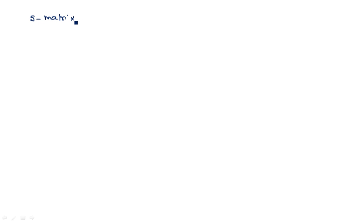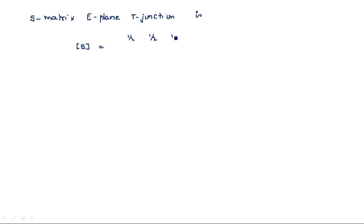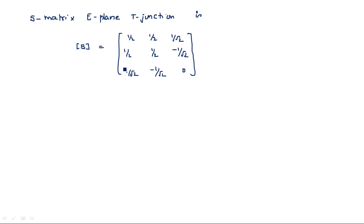The S-matrix of the E-plane T-junction is a 3×3 matrix. Its values are: 1/2, 1/2, 1/√2 in the first row; 1/2, 1/2, −1/√2 in the second row; and 1/√2, −1/√2, 0 in the third row. This is the S-matrix of the E-plane T-junction.